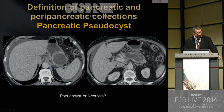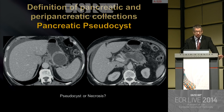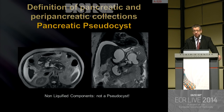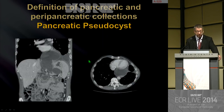Here it looks like a pancreatic pseudocyst at CT — round shape, enhancing wall, homogeneous. But in the same patient, around the pancreatic body there is something much more heterogeneous. MRI is clearly a problem-solving technique because it is not a pseudocyst — it is a necrotic collection with solid components, which is clearly seen. And here too it looks like a pseudocyst, but there are solid components inside the lesion, confirming it as an acute necrotic collection.